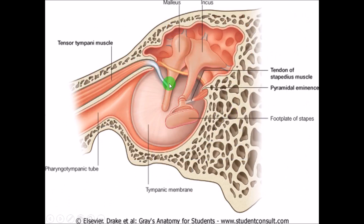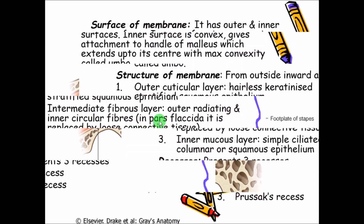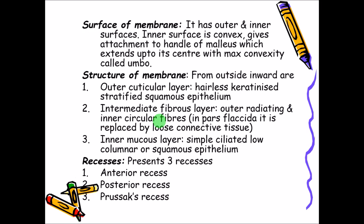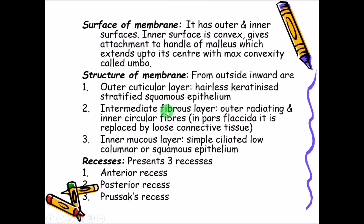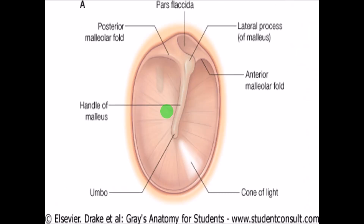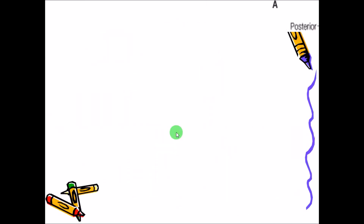The handle extends up to the center of the tympanic membrane, with maximum convexity called the umbo. The lowermost part is curled and is called the umbo. As you can see in the picture, this most bent part of the handle of the malleus is called the umbo.